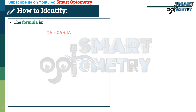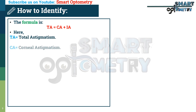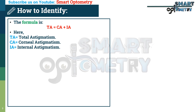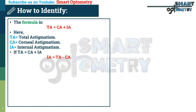The formula is: TA = CA + IA, where TA equals total astigmatism, CA equals corneal astigmatism, and IA equals internal astigmatism. If total astigmatism equals corneal astigmatism plus internal astigmatism, then internal astigmatism equals total astigmatism minus corneal astigmatism.